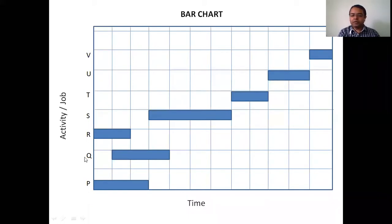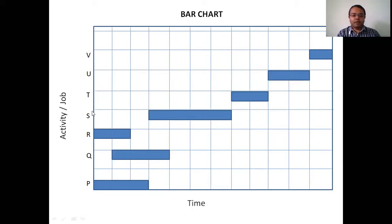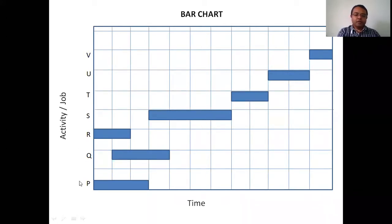Suppose if you want to construct an apartment, the first activity P will be cleaning up the site. Next, Q will be the layout. Suppose R is the excavation phase. Next, S will be concreting of a footing. Then the next level will be the first floor level, that is the casting of a slab. Likewise you can divide different activities to be done while constructing any infrastructure.